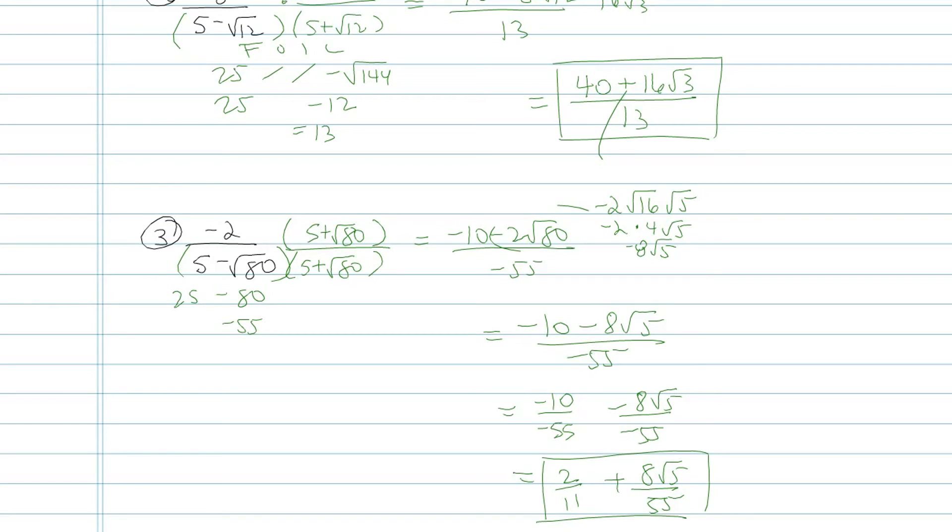So what we did with these is we multiplied top and bottom by one. But it wasn't just one. It was a clever form of one. We multiplied by the conjugate of the denominator.